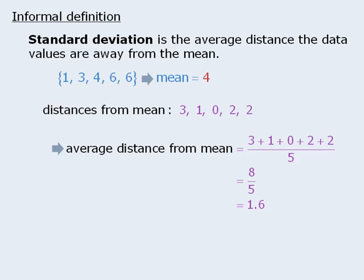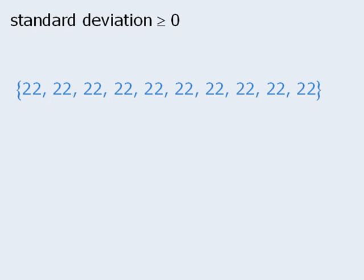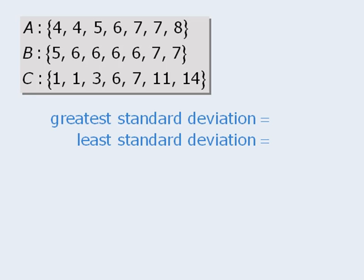As stated earlier, you will never be required to calculate the standard deviation of a set of numbers on the GRE. Now let's examine a few properties of standard deviation. First, the standard deviation of a set of numbers is always greater than or equal to 0. Second, whenever a set contains identical numbers, the standard deviation of that set is always equal to 0. A popular question type asks us to examine various sets of numbers and determine which one has the greatest standard deviation and which one has the least. We don't need to actually perform any calculations — upon inspection, set C must have the greatest standard deviation. The numbers in set B appear to deviate the least from the mean, so it must have the least standard deviation.